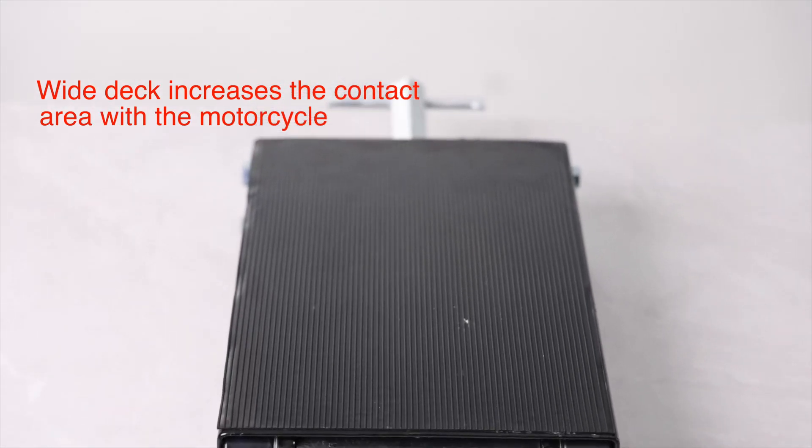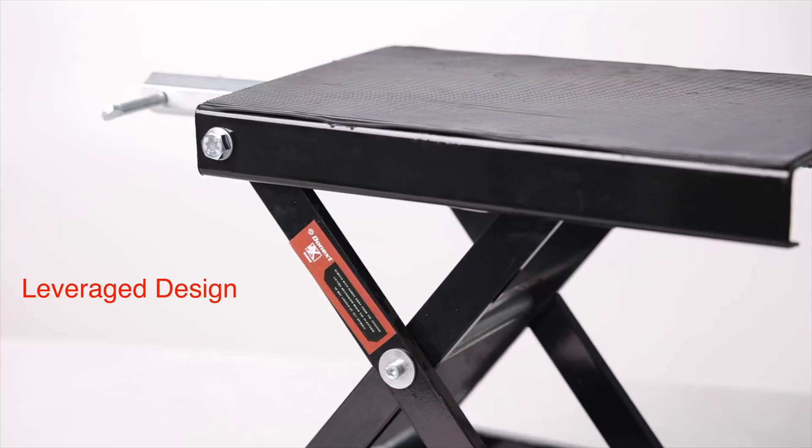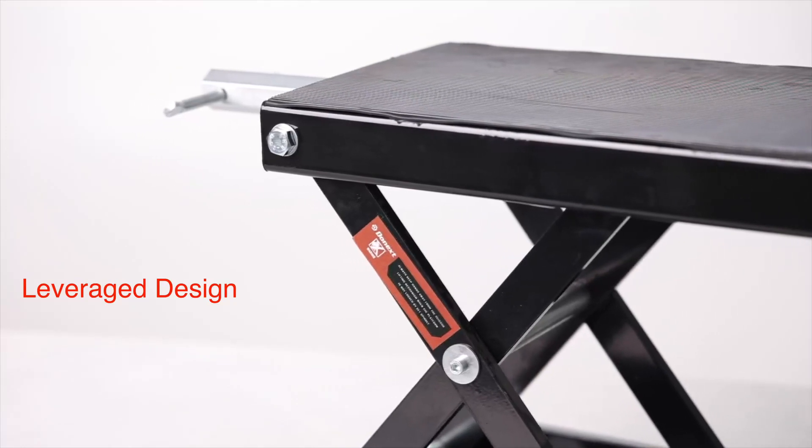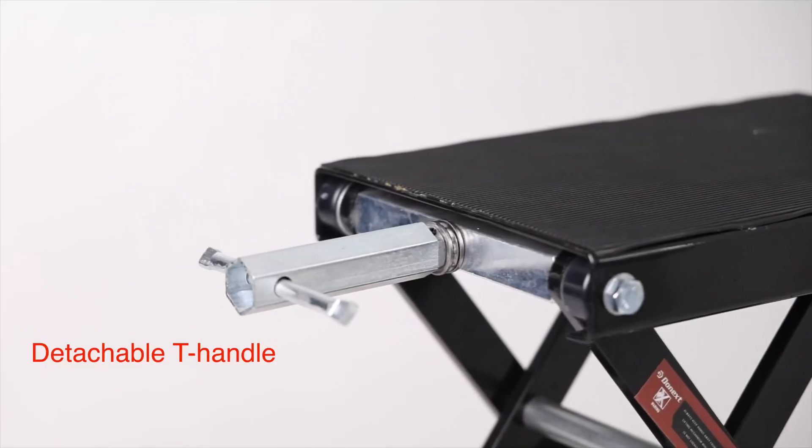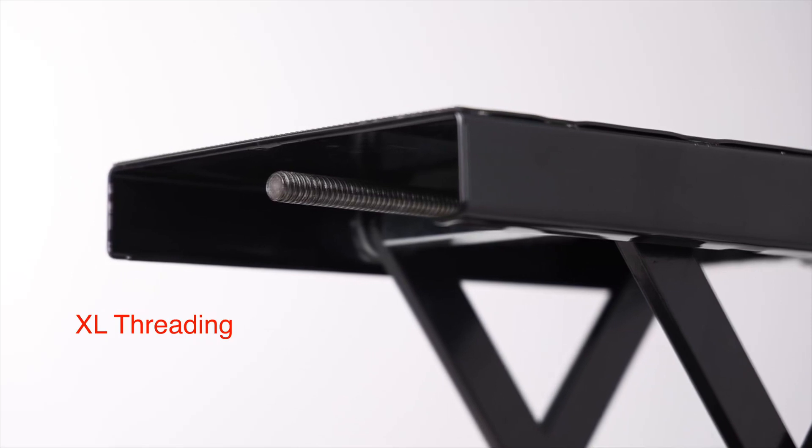Dynamic lift height range from 3.5 to 14.75. The motorcycle center jack can be used to lift street bikes, cruiser bikes, and venture touring motorcycles.